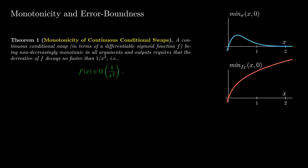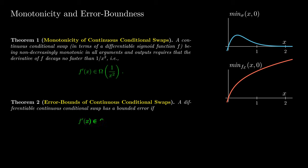However, monotonicity is not enough for a good differentiable swap operator, as this also includes distributions leading to relaxations with unbounded error as displayed in red. Thus, we also characterize the error-boundness and find that error-bounded relaxations have distributions where the PDF lies in O of 1 over x squared. This leads to a very nice characterization of monotonic error-bounded functions, which is theta of 1 over x squared. A nice example is the Cauchy distribution, as displayed in green.